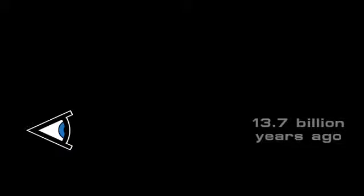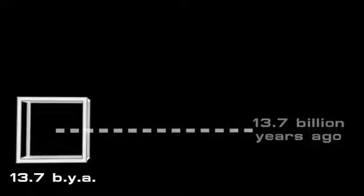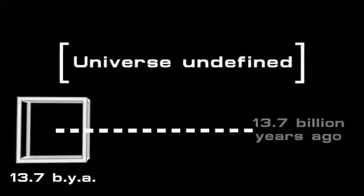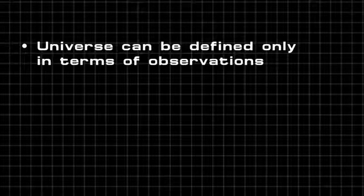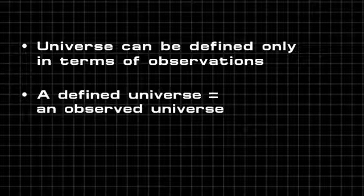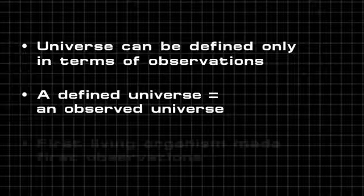But what about describing the early universe from the perspective of that time, before there were any observers? The theory says that this cannot be done. Since the universe can be defined only in terms of observations, a defined universe can only be said to have existed for as long as it has been observed.